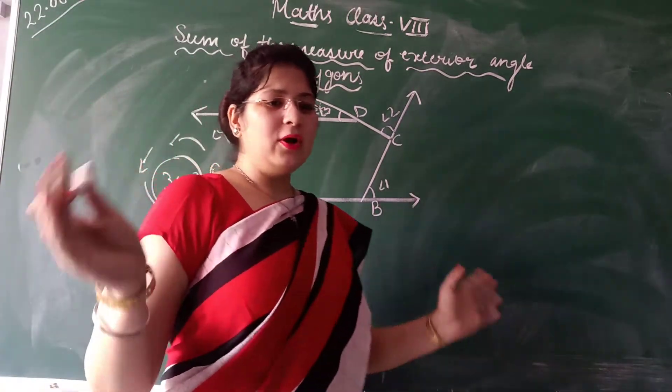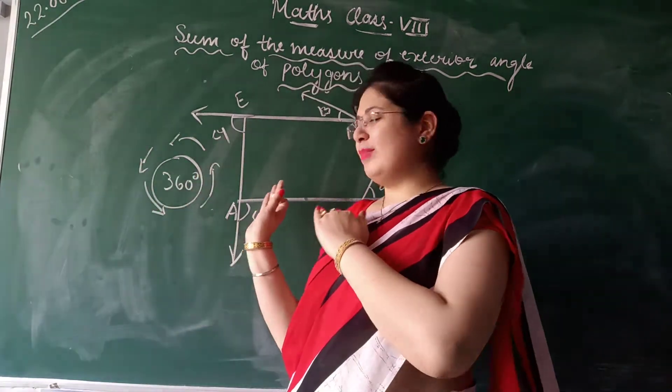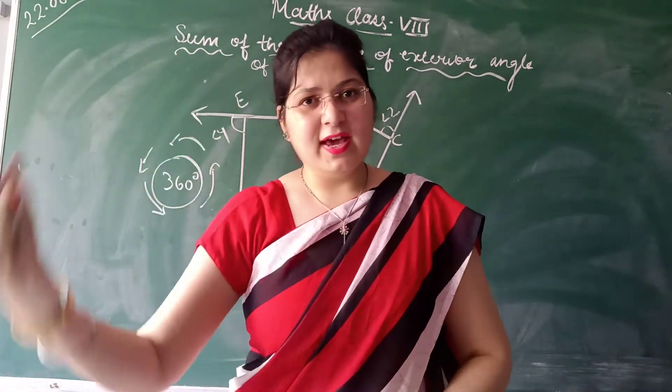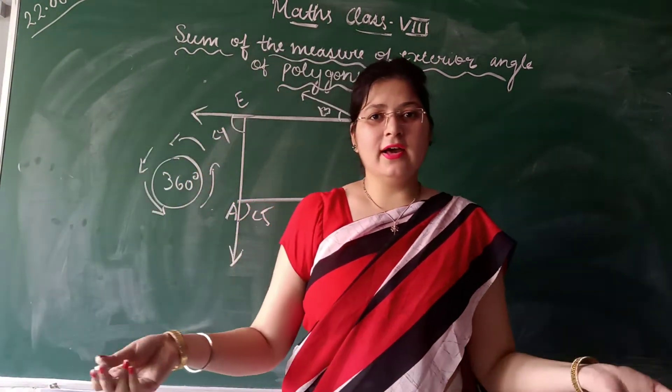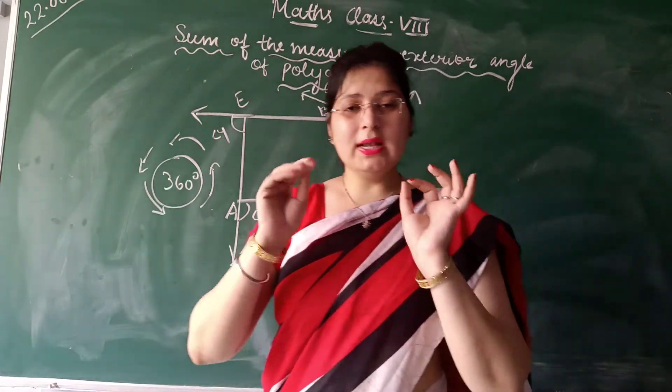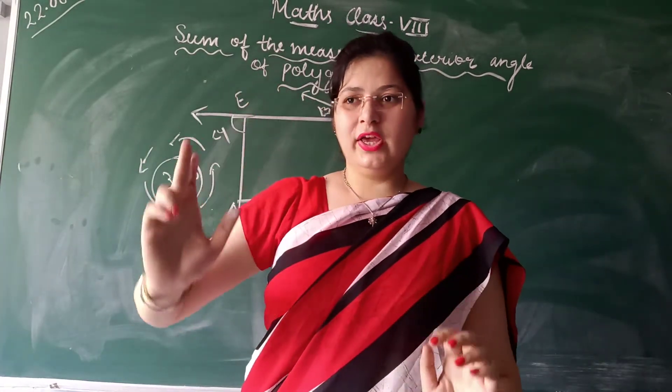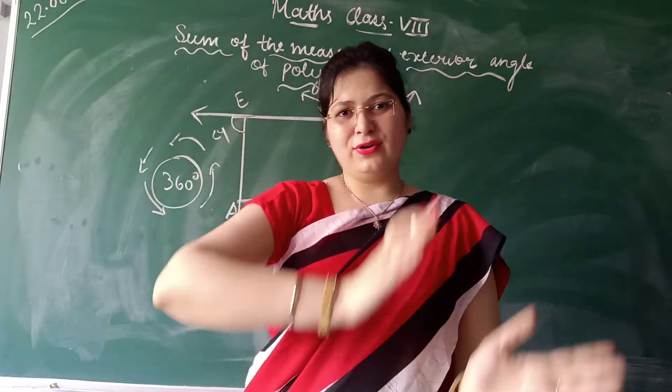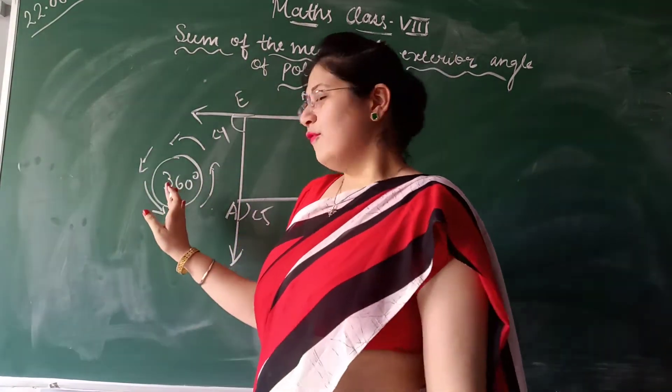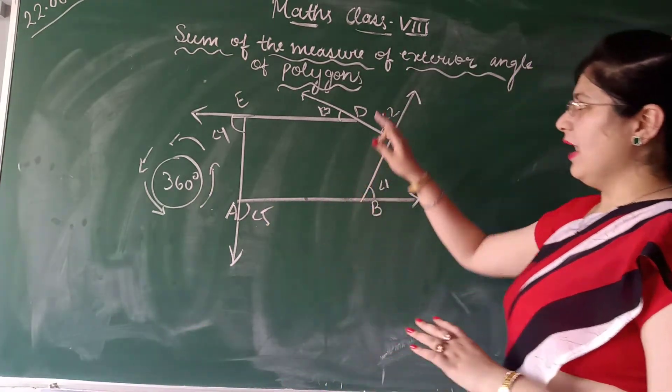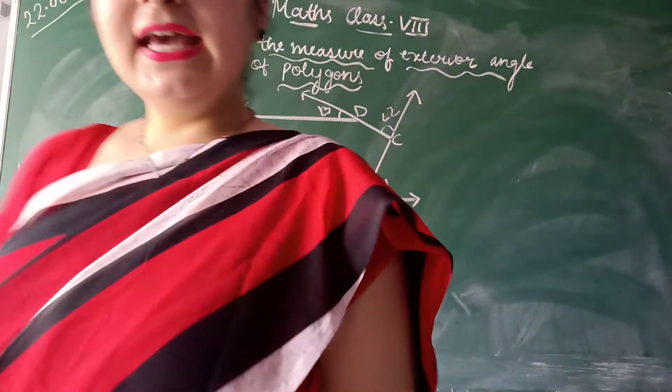You can take the example of triangle, quadrilateral. I have taken the example of pentagon. You can take the example of hexagon, heptagon, octagon, nonagon, decagon. You will get the same result because you will take the full turn to come back to the original position after reaching all the points. So the sum of the exterior angle of any polygon is 360 degrees.